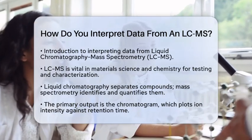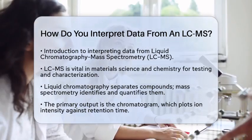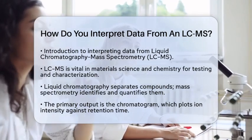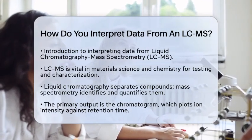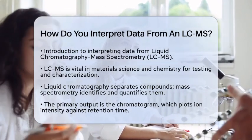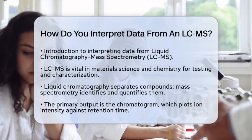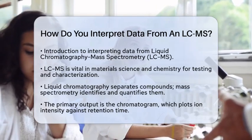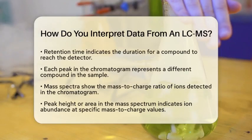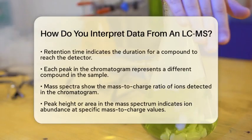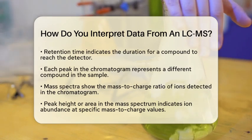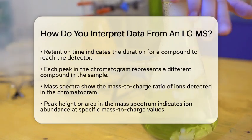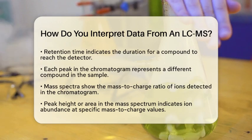The primary output you will encounter is the chromatogram. This graph plots the intensity of detected ions against their retention time. Retention time indicates how long it takes for a compound to travel through the chromatography column to the detector. Each peak in the chromatogram represents a different compound present in the sample.